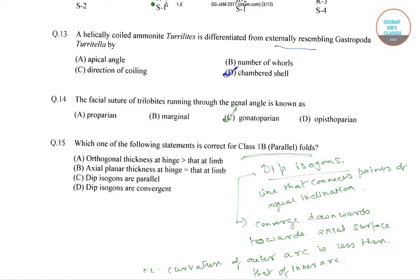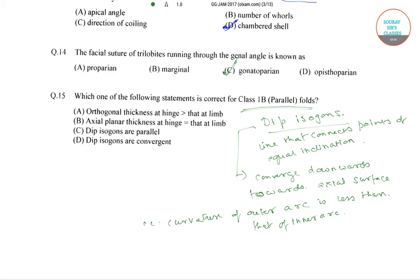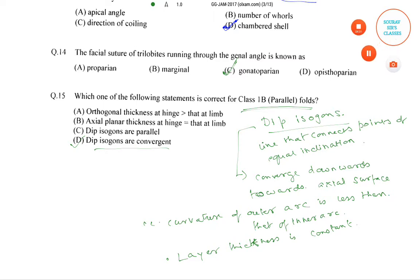The layer thickness is constant. Therefore option D — that dip isogons are convergent — is the correct statement for Class 1b parallel folds.